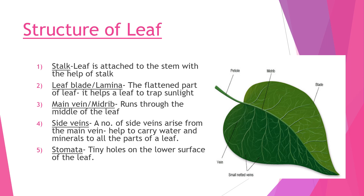The petiole or stalk is the part through which the leaf is connected to the plant; the leaf absorbs water and minerals from the branches through the petiole, and food made by the leaf is sent back through it to the plant. The leaf blade or lamina is the flat part of the leaf that allows the plant to absorb sunlight. The midrib or main vein is like a center tube running through the center of the leaf, further divided into many side veins that carry water and minerals to all parts of the leaf. Stomata are the tiny holes on the lower surface of the leaf that carry out exchange of gases - taking in carbon dioxide and giving out oxygen.